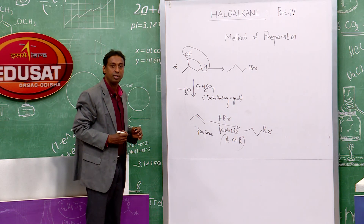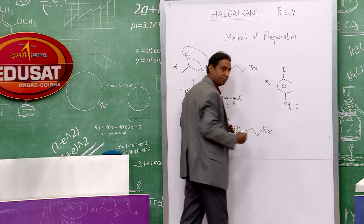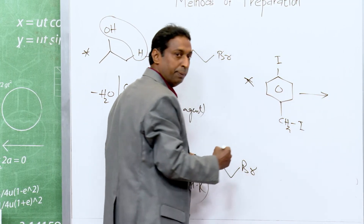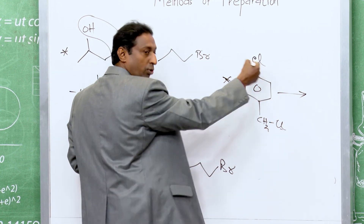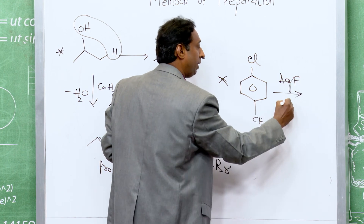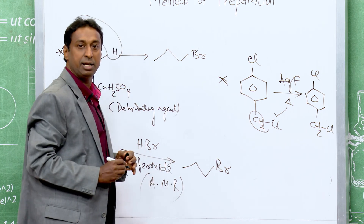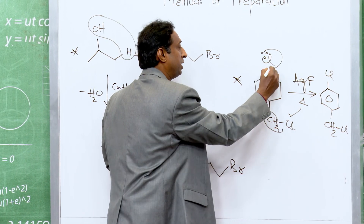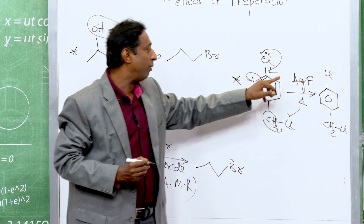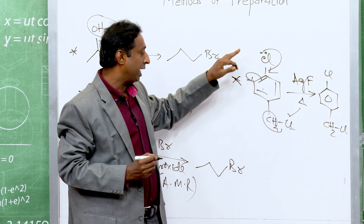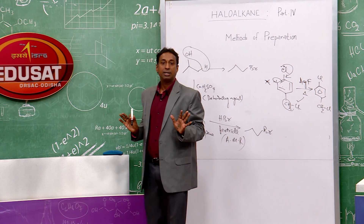Another problem: a benzene ring attached to one chlorine on the ring and one CH2Cl group outside. Using Swarts reaction (AgF + heat): only the CH2Cl chlorine is replaced by F. The chlorine on the ring is not removed because it undergoes resonance/conjugation with the benzene ring system.